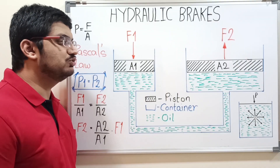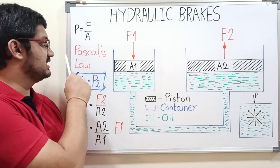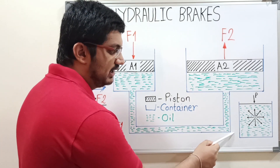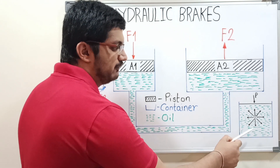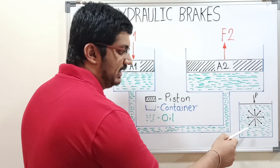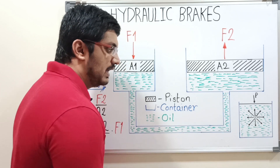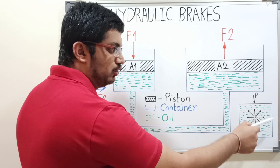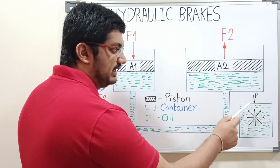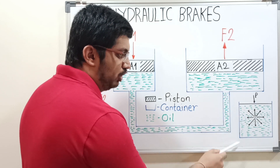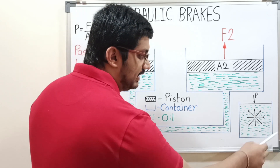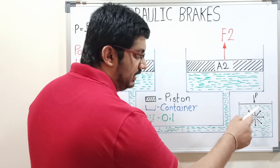Hydraulic brakes work on the principle of Pascal's law. Consider a closed container with a fluid inside it. The law states that if pressure P is applied on a fluid in a closed container, then this fluid will exert the exact same pressure P on all the walls of the container in all directions. This is possible due to the incompressibility of the fluid — ideally, a fluid is totally incompressible.